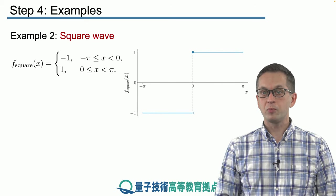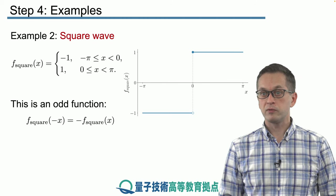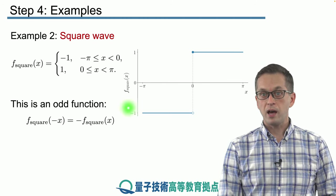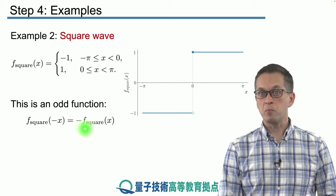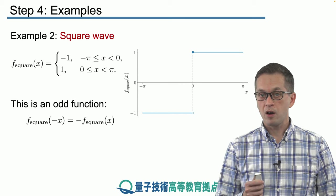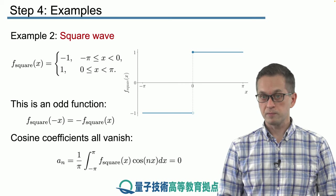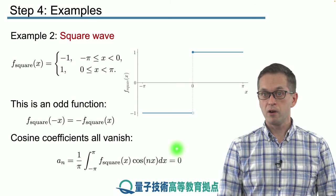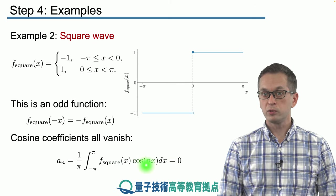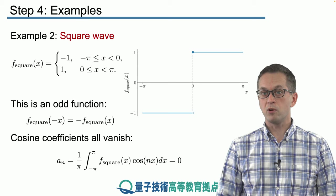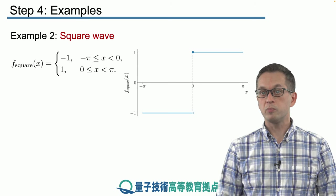So how do we compute the Fourier series coefficients? First, we examine the function and we see that it's odd, meaning f(-x) is equal to -f(x). So what this tells us is immediately that all of the cosine coefficients vanish, meaning all of the an's are 0. Why? Because here we have an odd function multiplying an even function. The product is odd, therefore this integral vanishes. So all we have to do is compute the bn coefficients.